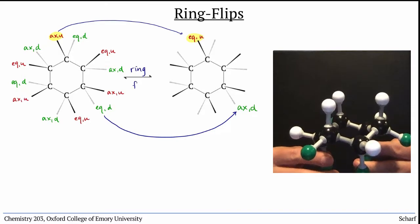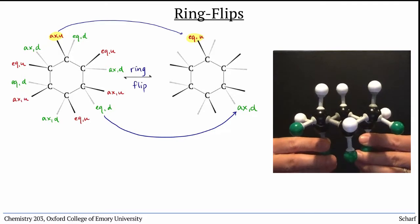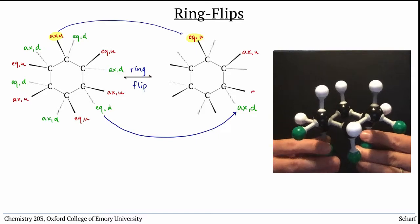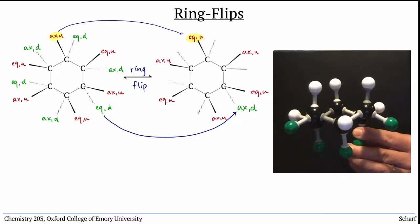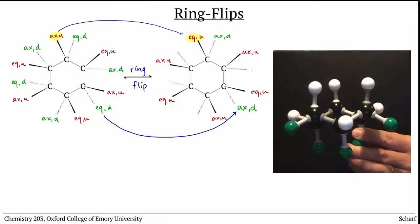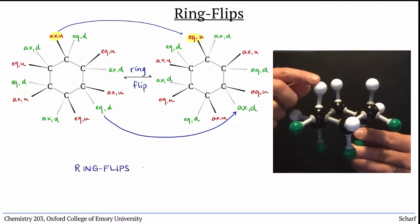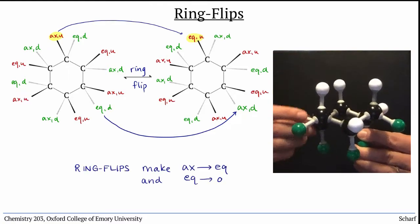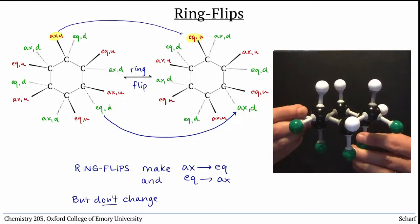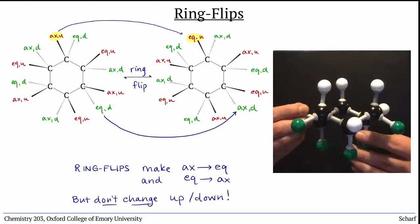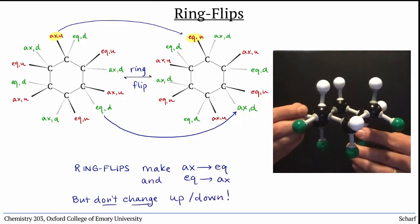This is referred to as a ring flip, and most cyclohexanes undergo them quite easily. The two possible conformations are in equilibrium with each other. It's important to note that ring flips switch axial and equatorial substituents, not up and down.